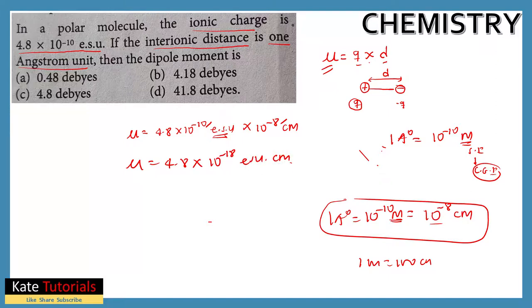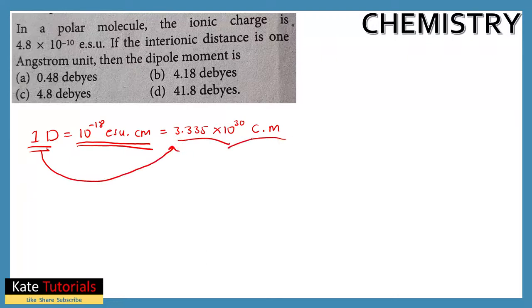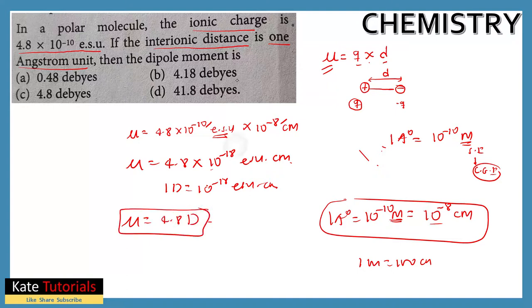For unit conversions, you should know that 1 Debye (D) is nothing but 10⁻¹⁸ ESU·centimeter — that is the CGS system. The same 1 Debye, if expressed in SI units, is C·m (coulomb-meter), which equals 3.335×10⁻³⁰ C·m. So here we got 4.8×10⁻¹⁸ ESU·cm, and since 1 D = 10⁻¹⁸ ESU·cm, mu = 4.8 D.